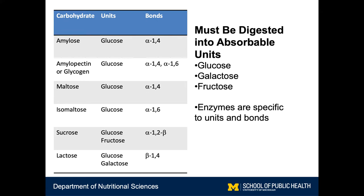We've discussed several of these carbohydrates in prior units. For carbohydrates to be able to be absorbed into our bodies, they must be broken down into their constituent monosaccharide subunits — glucose, galactose, or fructose. So these carbohydrates, which are a combination of polysaccharides and disaccharides, contain at least one glycosidic bond. These glycosidic bonds need to be broken to release the individual monosaccharide units.